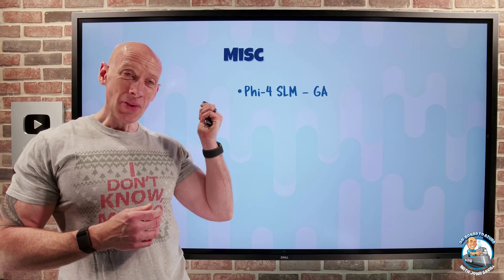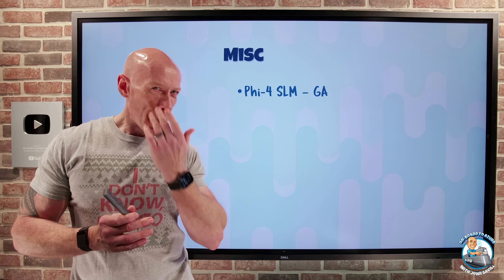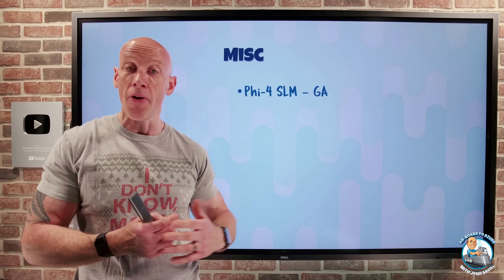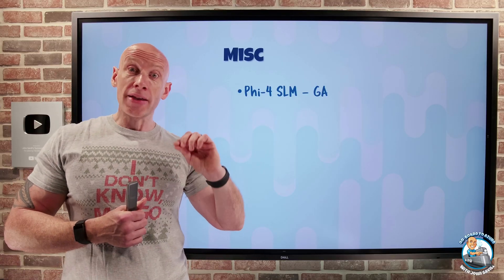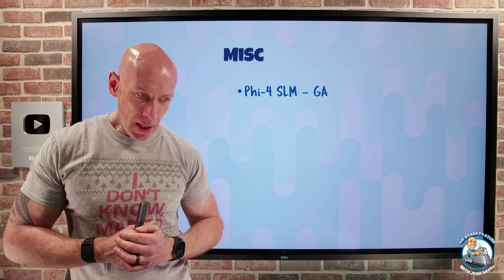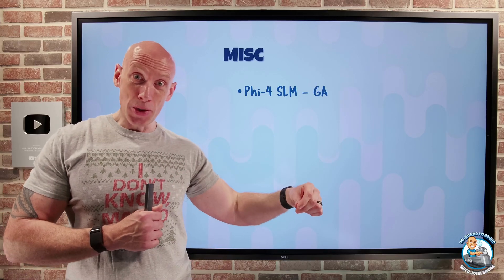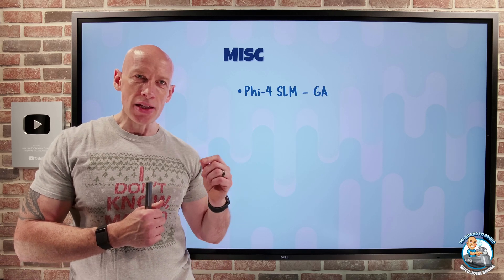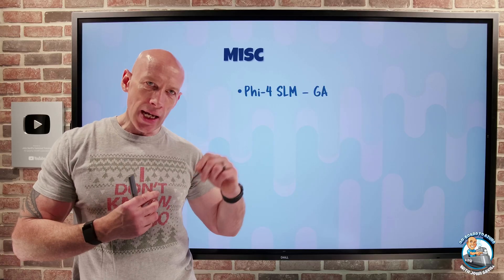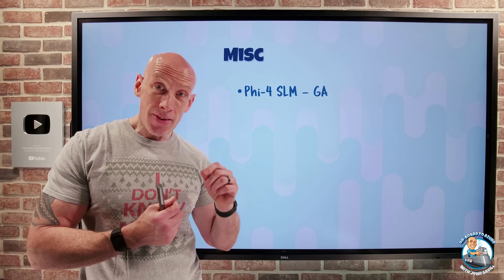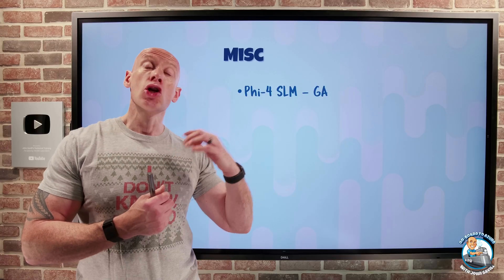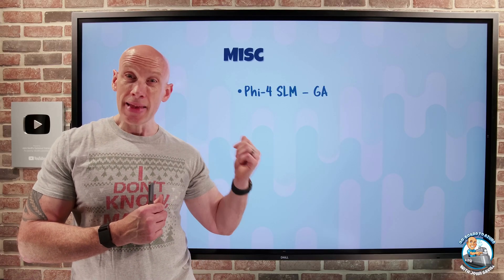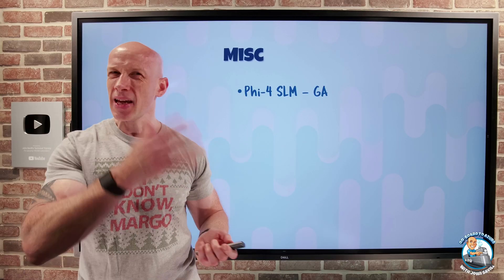The Phi 5.4 small language model is now available, out of Microsoft Research. It's a 14-billion-parameter model — small compared to large language models — and it's very good at complex reasoning including math tasks and language processing. It actually outperforms large language models today on complex math competition problems, achieved through advanced training tweaks, high-quality synthetic datasets, data curation, tuning, and post-training. It's available now in Azure AI Foundry, with expansion to Hugging Face expected soon.